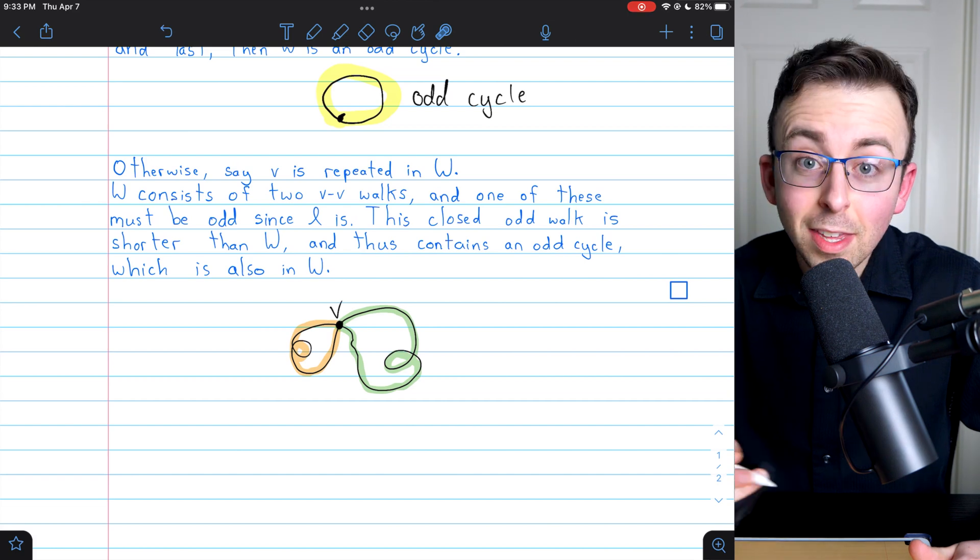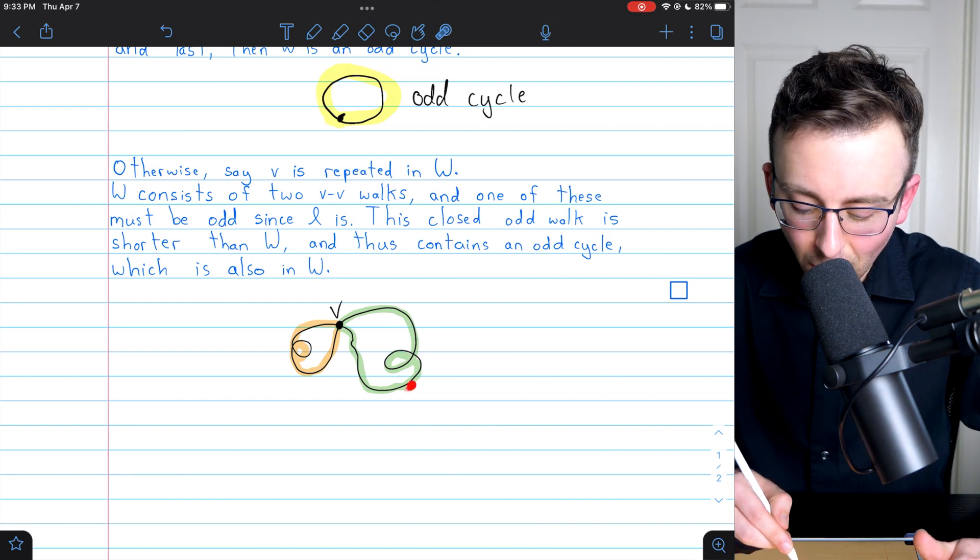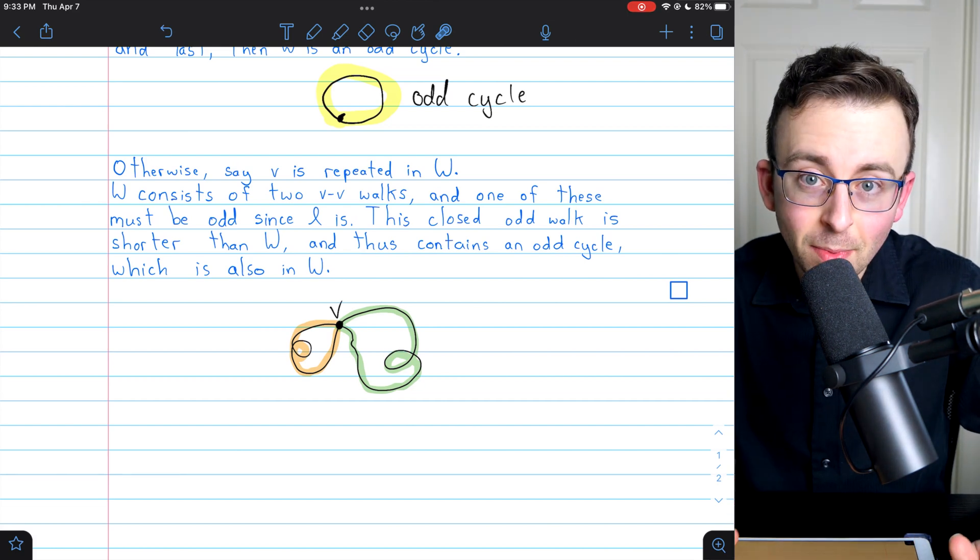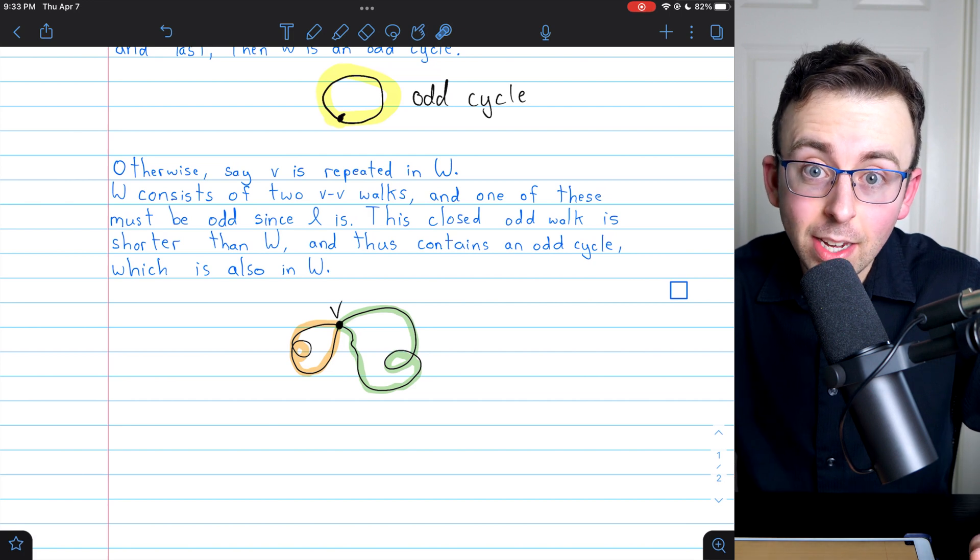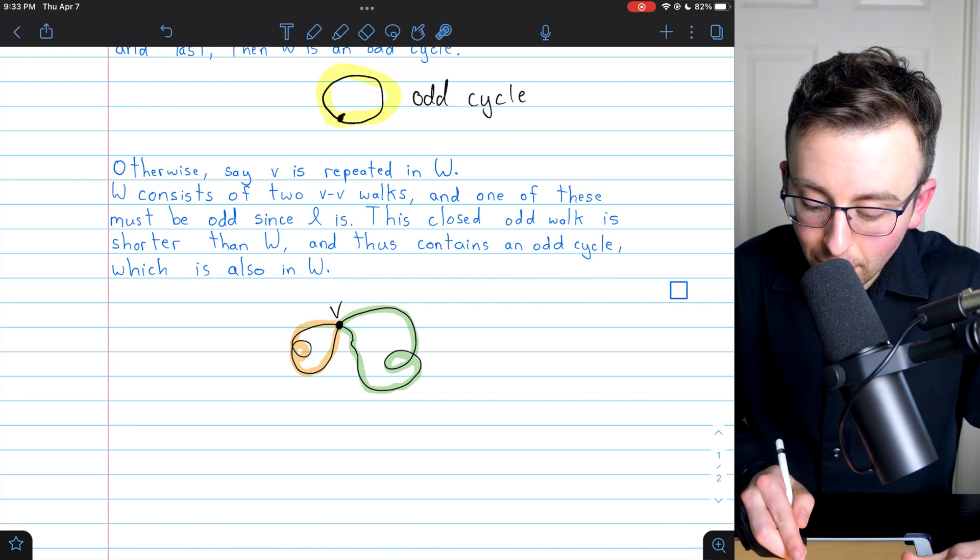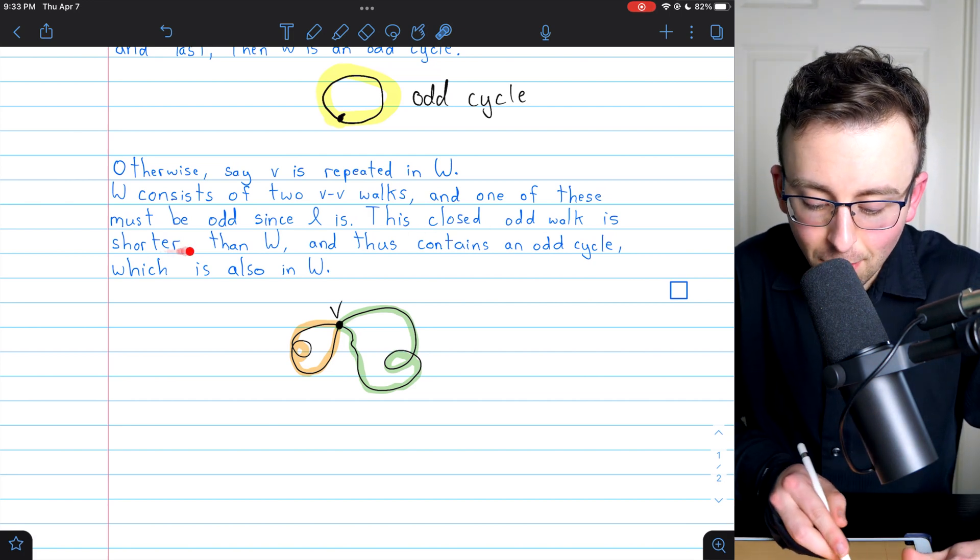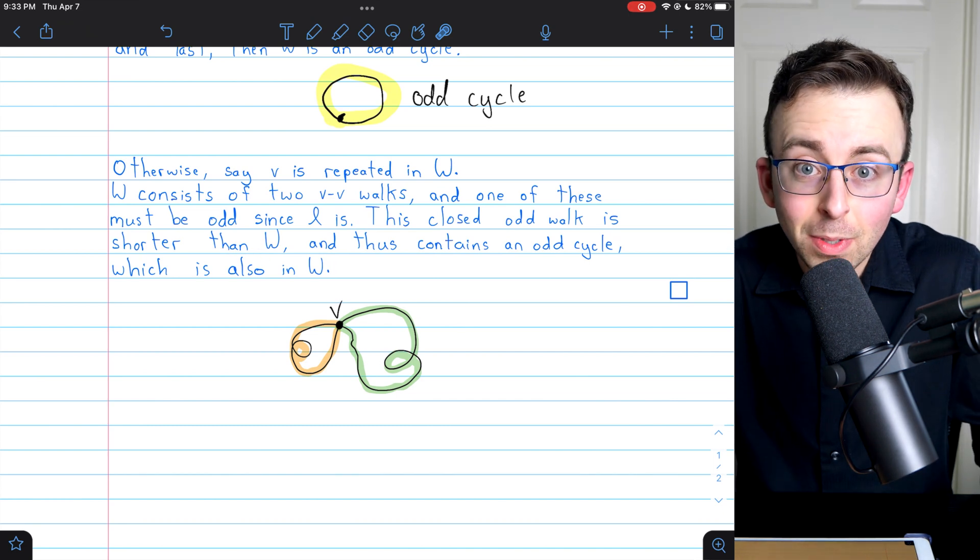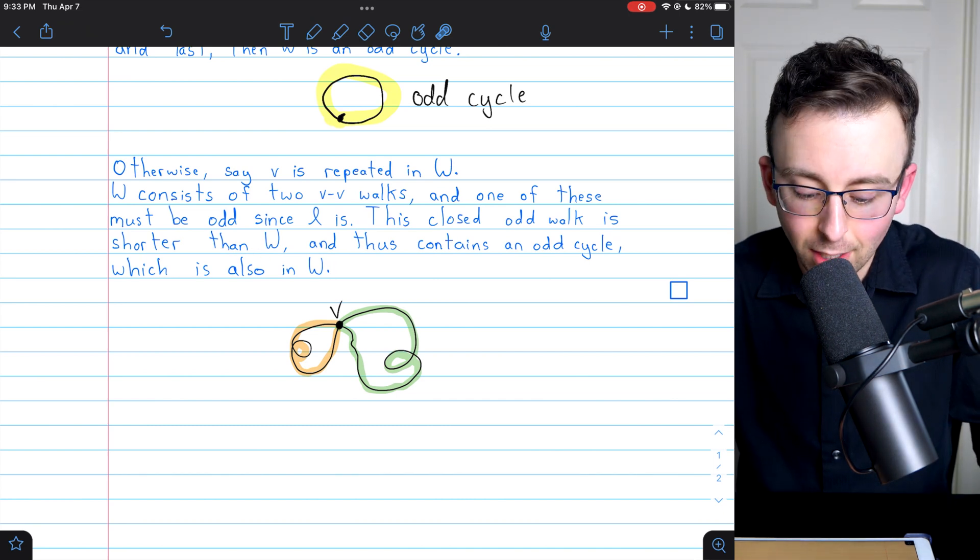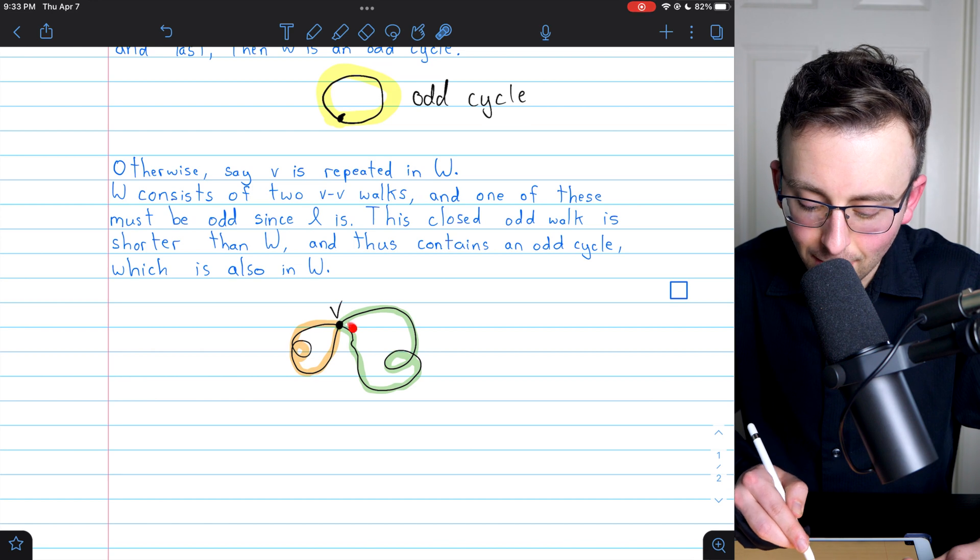For our picture, let's just say that the odd walk is this one here, highlighted in green. The key insight we have to make to finish the proof is that this closed odd walk has to be shorter than W, because it's just part of W. W is made up of this guy and this guy.